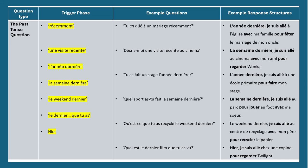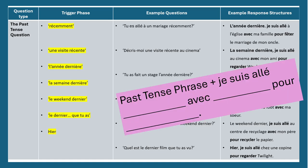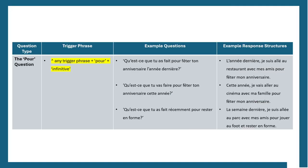For 'Quel est le dernier film que tu as vu?' (What is the last film you saw?): 'Hier, je suis allée chez une copine pour regarder Twilight.' You could also add 'c'était' (it was) — c-apostrophe-e-acute-t-a-i-t — plus a positive or negative adjective and a reason. So the full past tense structure is: past time phrase, then 'je suis allée', then where you went, then 'avec' and who you went with, then 'pour' plus an infinitive saying what you did.